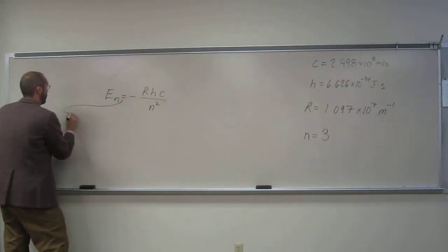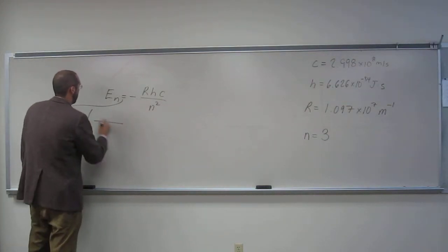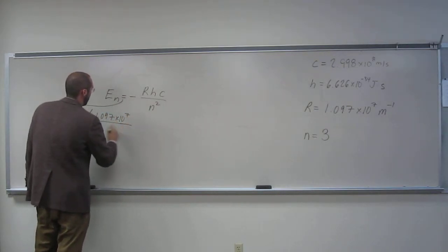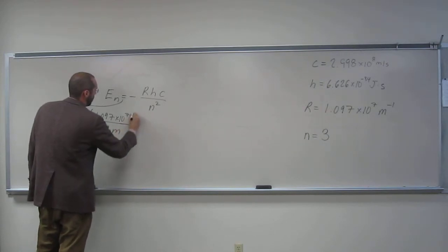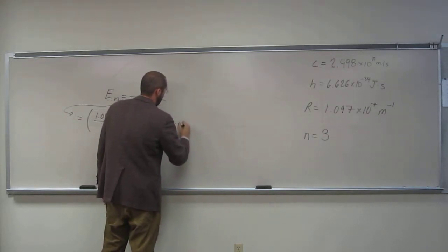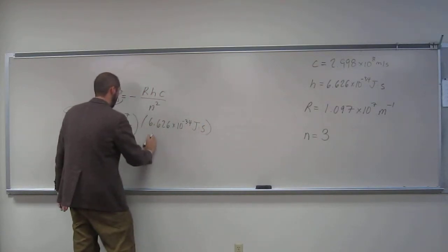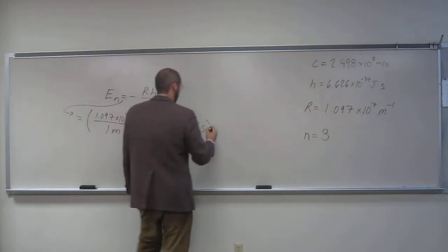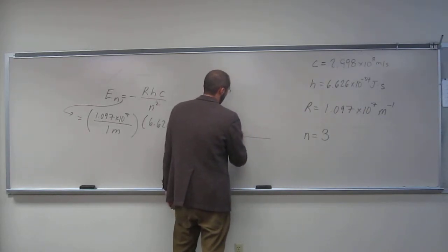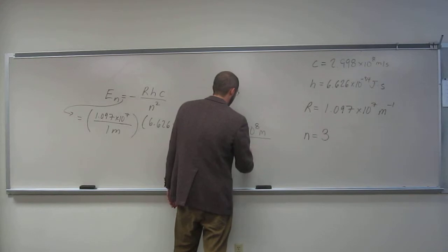So I have to give you RH and C. So let's go ahead and plug these things in. So R is 1.097 times 10 to the 7th, that's 10 to the negative 34 joule seconds, and 2.998 times 10 to the 8 meters per second.